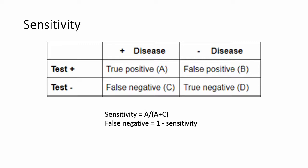To talk about sensitivity, we have our 2x2 table. Sensitivity is the proportion of true positive tests out of all the patients who have a condition — in other words, the ability of a test to yield a positive result for a patient who actually has the disease. This is very important for screening tests because you want your screening test to be highly sensitive to identify as many patients with the disease as possible. To calculate this, you divide the number of true positives out of all the patients who have the disease, or true positives plus false negatives — A over A plus C.